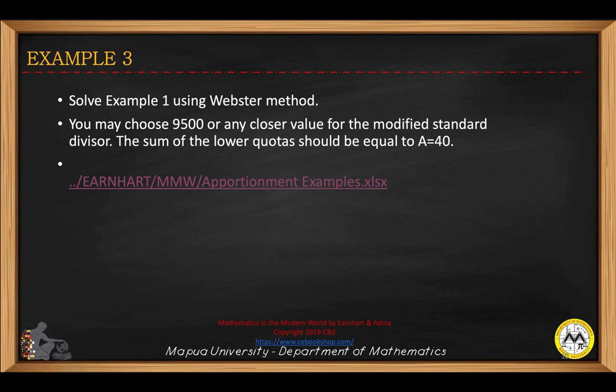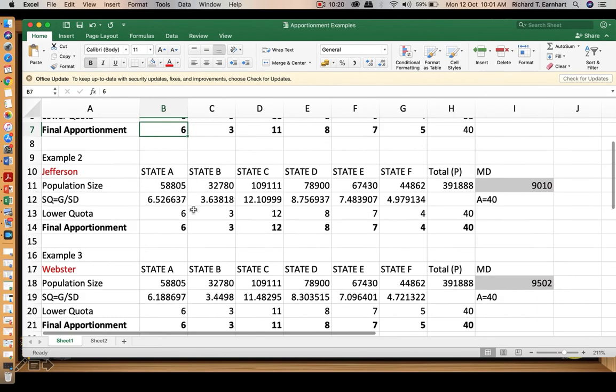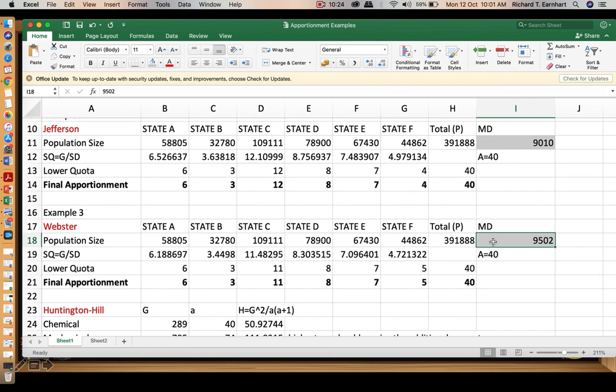We solve, again, example number one, but this time using the Webster method. We may choose 9,500 or any closer value for the modified standard divisor. The sum of the lower quota should be equal to 40. This is trial and error, so you can put any number here and then check if the total would be 40. The only difference is that when you compute for the lower quota, this is the Excel function for rounding off numbers, and then the second parameter is again 0. This is ordinary rounding off.